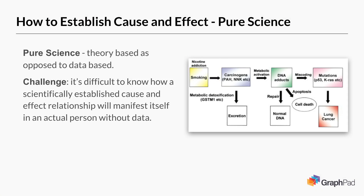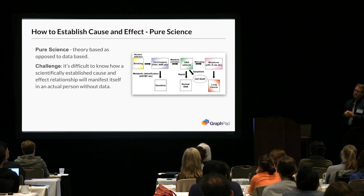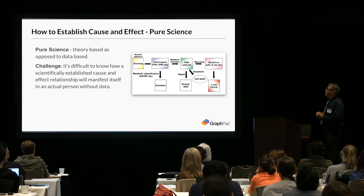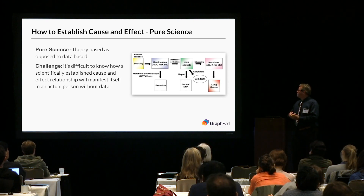The second area is pure science — certain things that you can map out. Here we've got smoking causing changes and mutations in the DNA, which leads to lung cancer. So scientifically, you can show that it's likely or logical that smoking causes lung cancer. The challenge is it's difficult on science alone to say this will cause cancer in actual people, because we all have different DNA and our bodies are complicated. You really need to collect some data to understand how strong that cause-and-effect relationship is, if it exists.